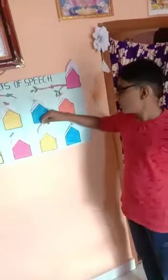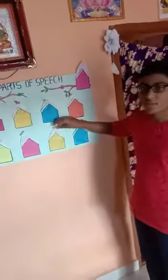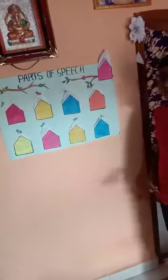Example sentence: 'Munoz and Luxman are good friends.' In this sentence, 'and' is the conjunction.